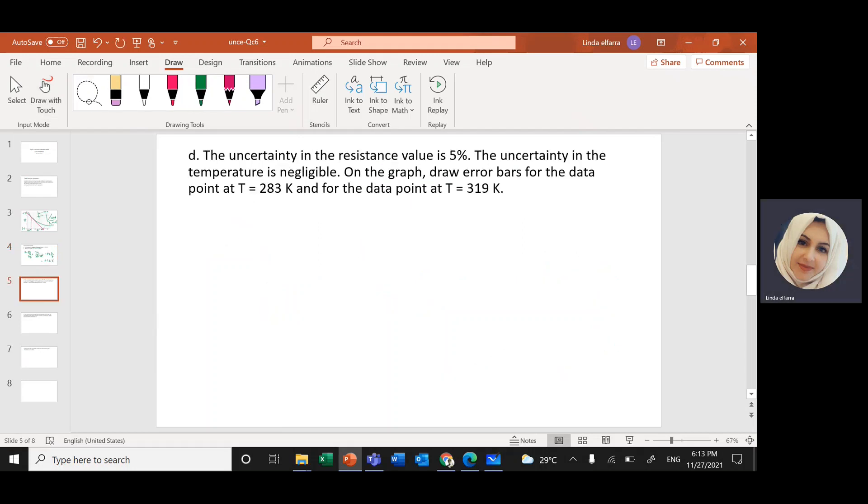Second part of the question. You have the uncertainty in the resistance is 5% and this is fractional or percentage uncertainty. 5%, it means 5 over 100, which means 0.05. So this one is the percentage uncertainty. Percentage uncertainty is the uncertainty divided by the original value will give me 0.05 or 5 over 100. Now the uncertainty in the temperature is negligible. So I have only uncertainty in resistance.